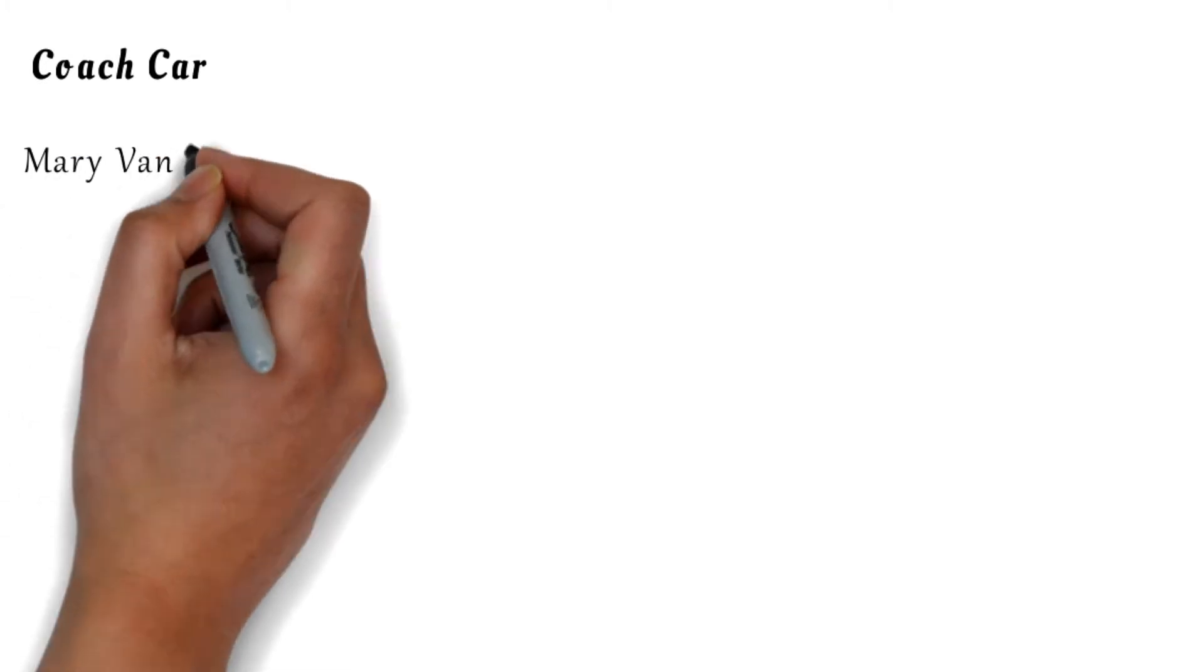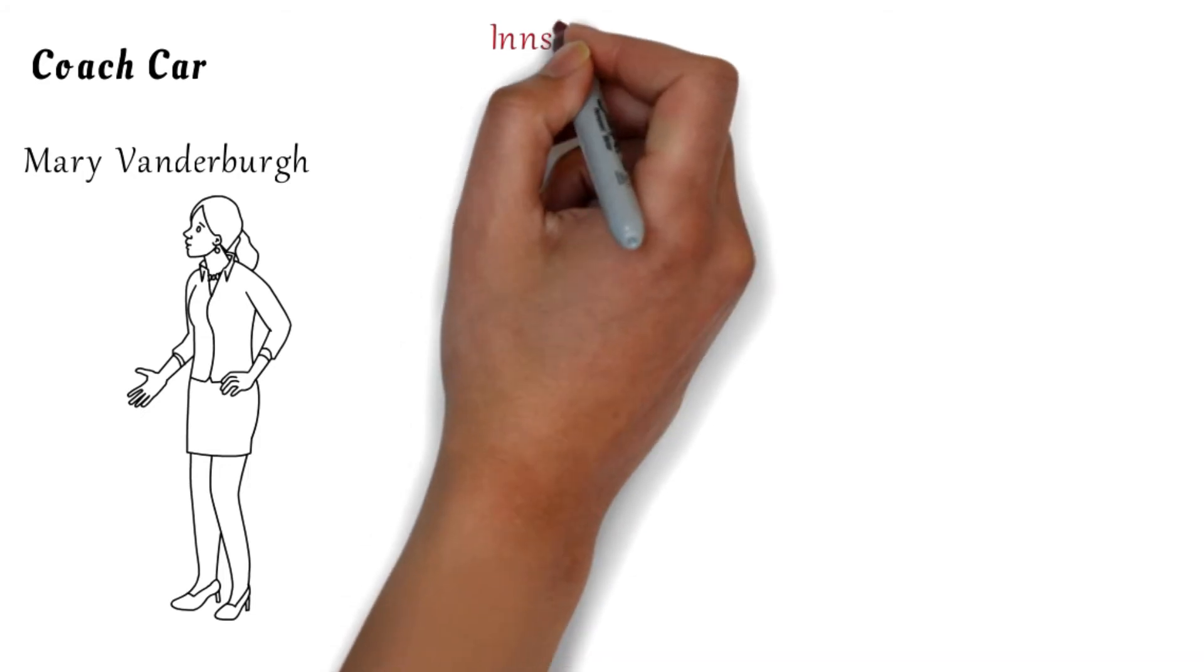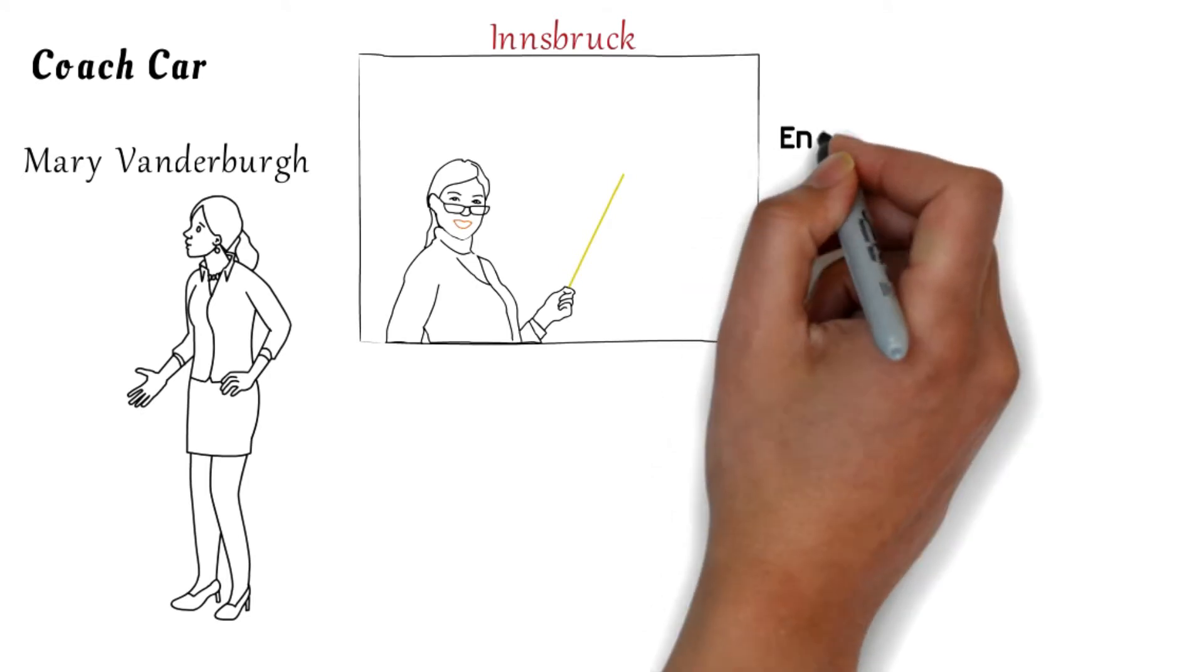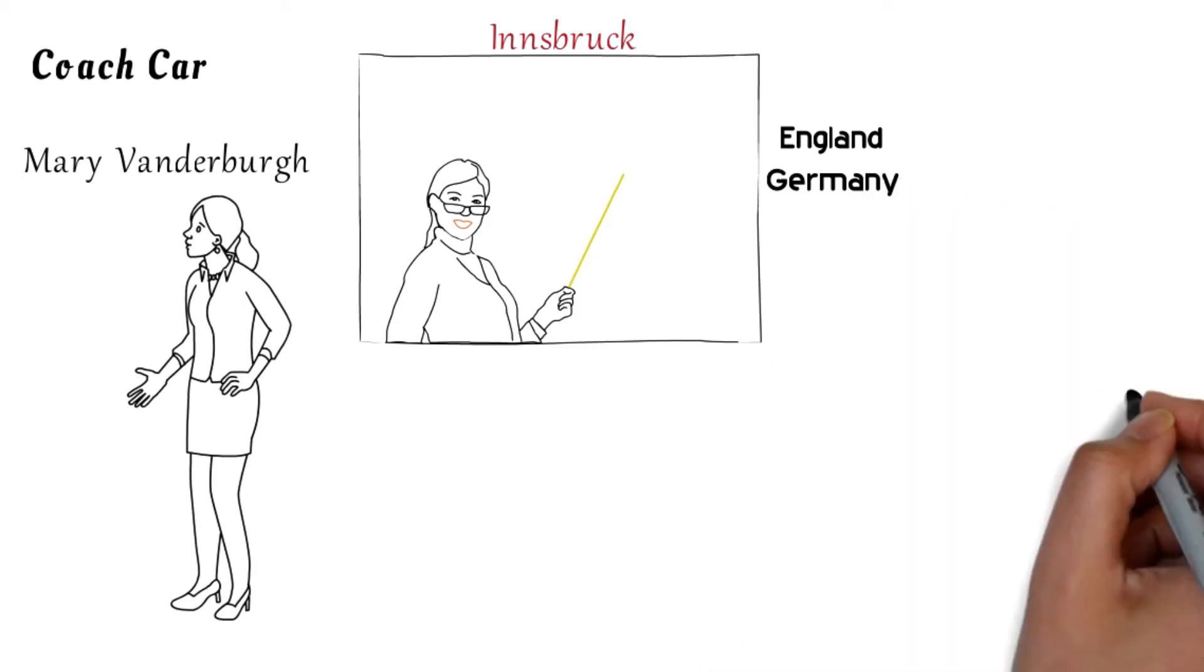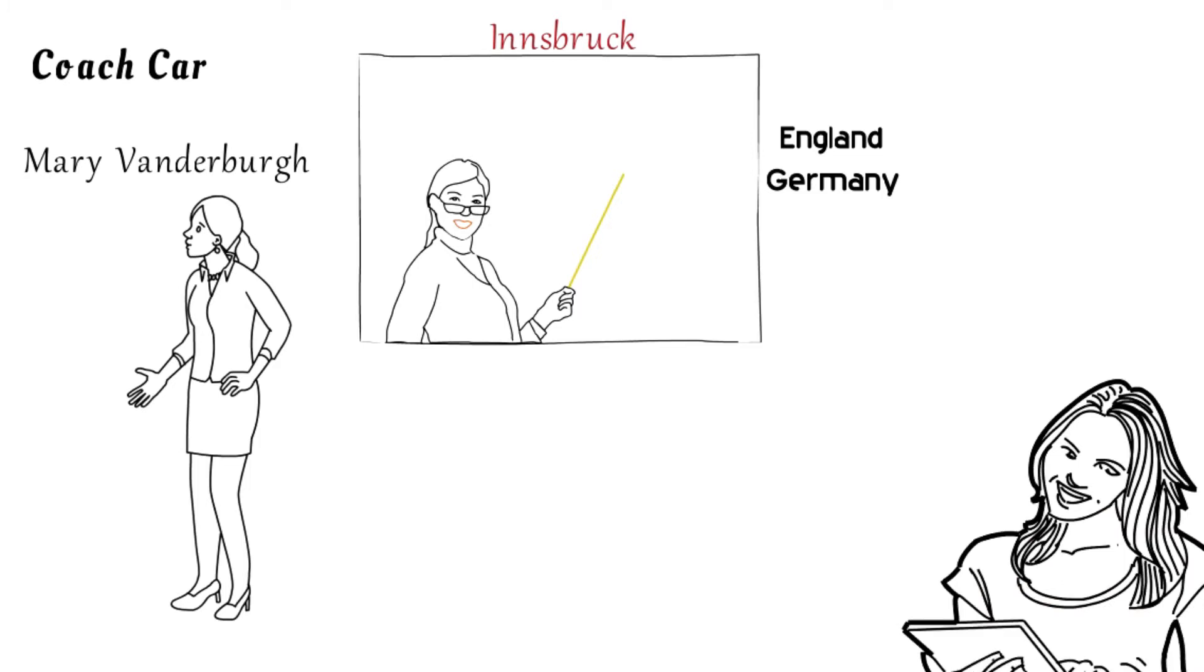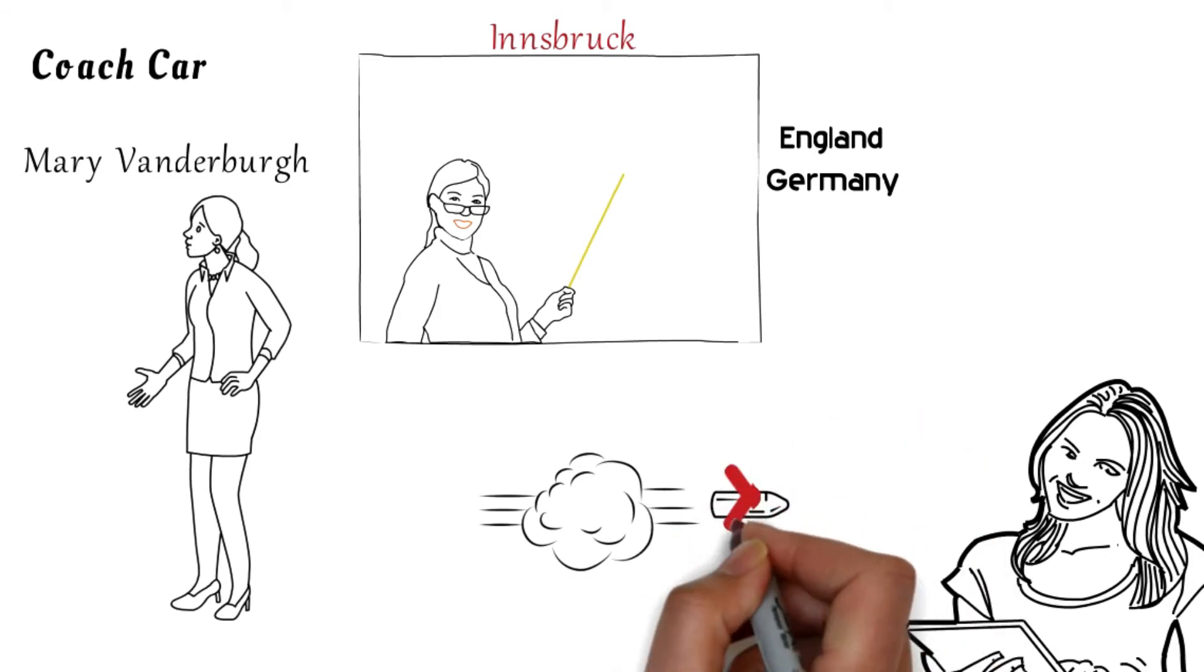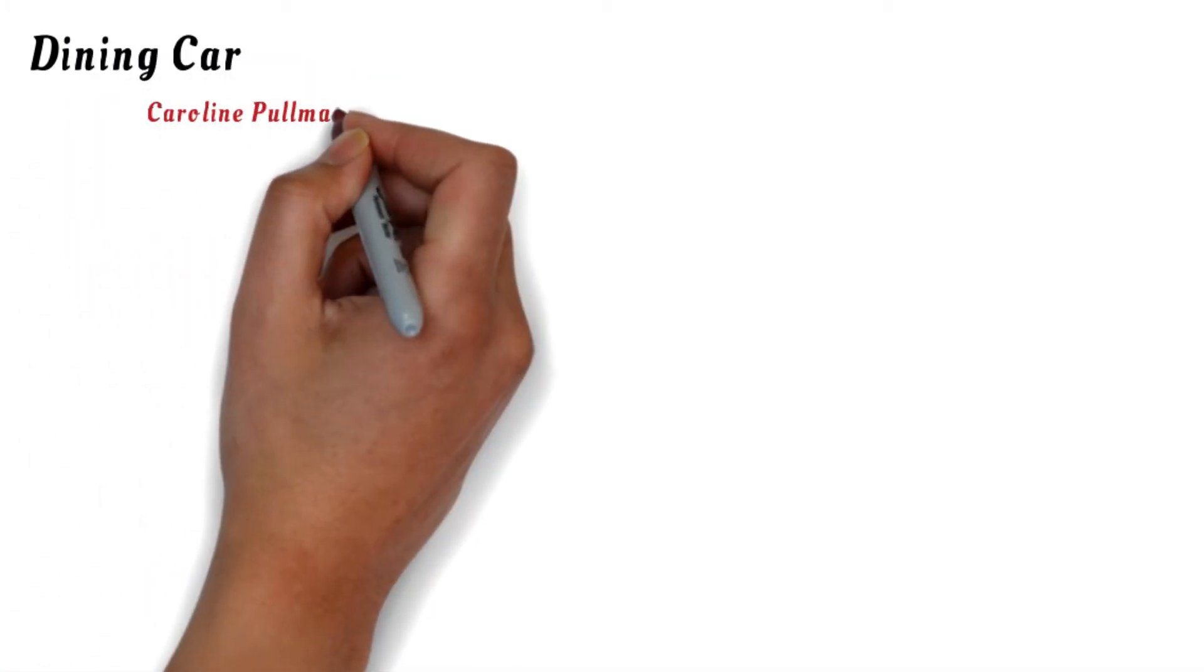Then in the coach car, you'll speak with Miss Mary Vanderberg, a governess on her way to a new assignment in Innsbruck to begin teaching a family of young girls. She usually doesn't travel too far away from her home in England but decided to broaden her horizons after her last placement in Germany. She claims to have been reading in her seat when the murder occurred. Miss Vanderberg is seated closest to the sleeping car and she also says that she did not hear a gunshot and did not see Mr. Gruber behaving strangely.